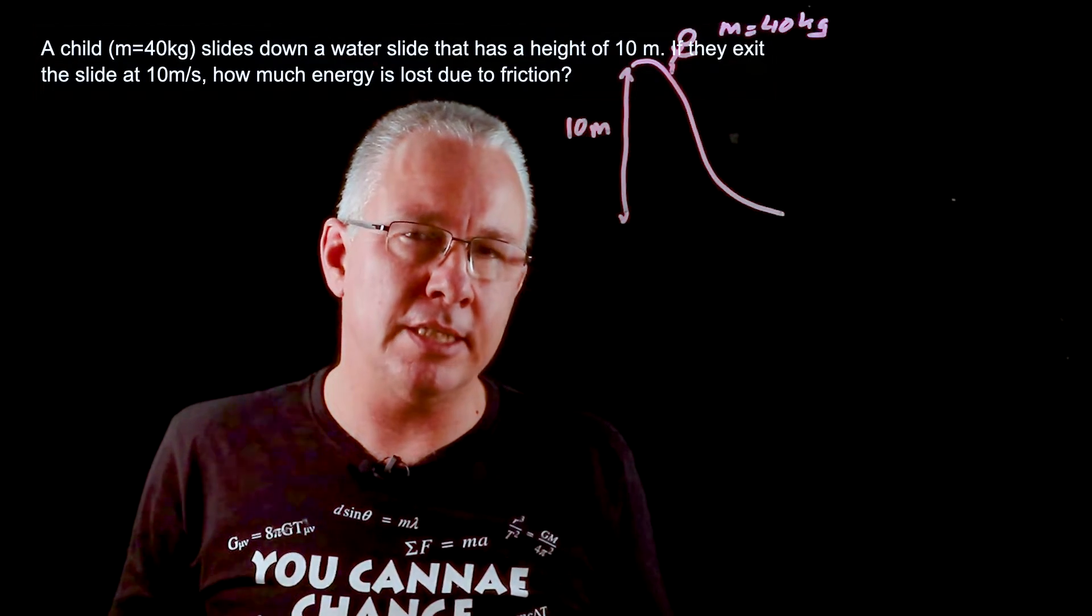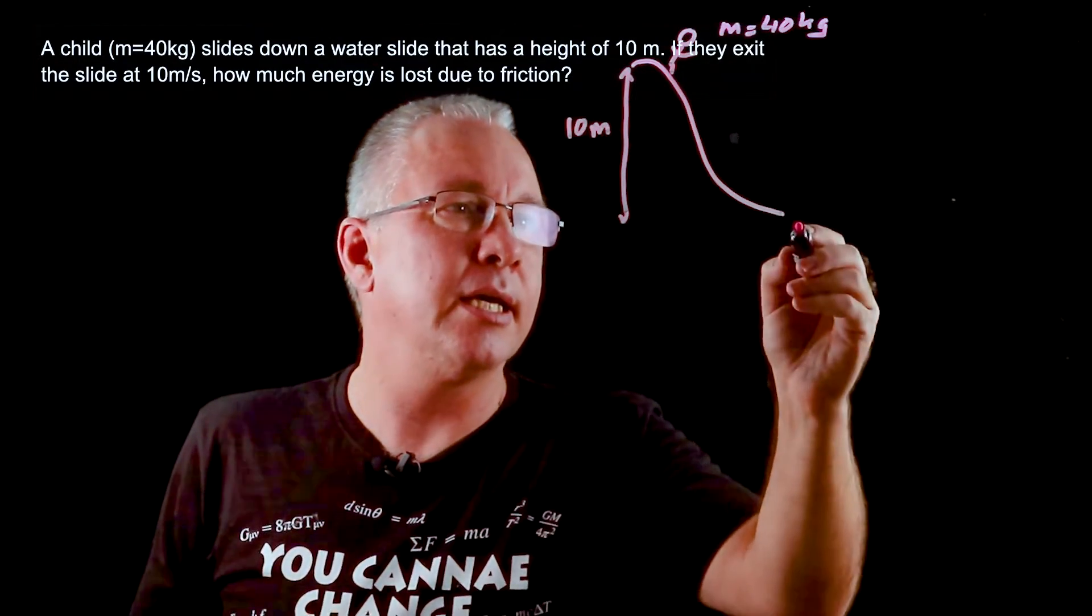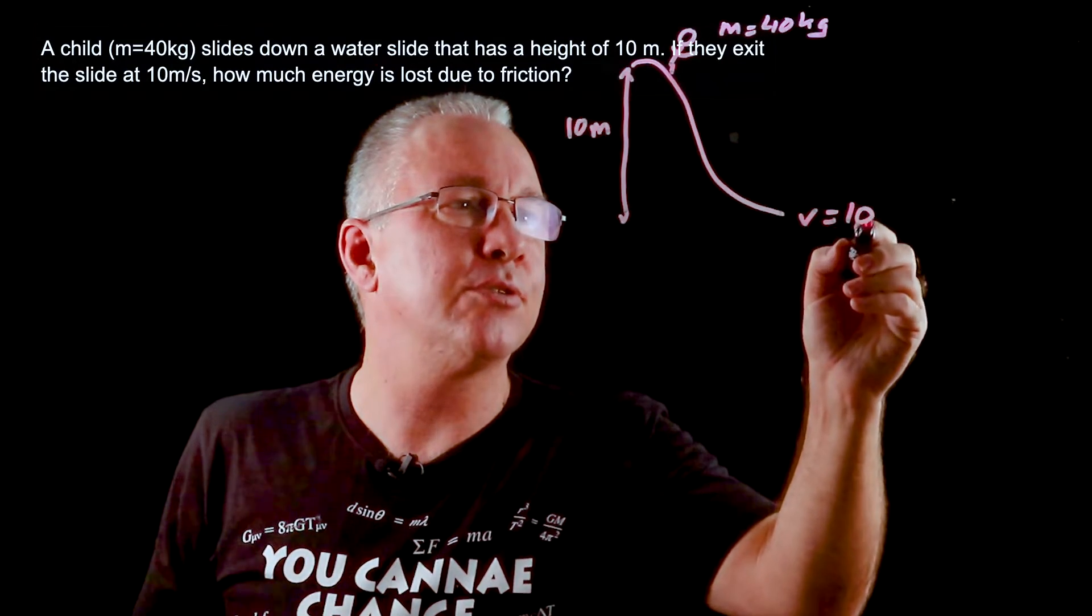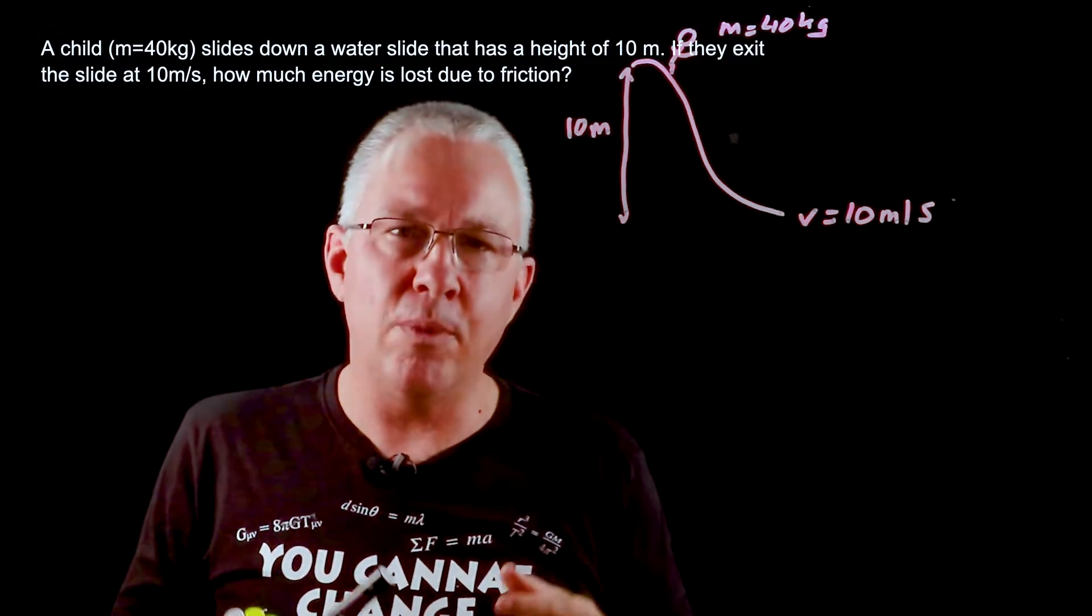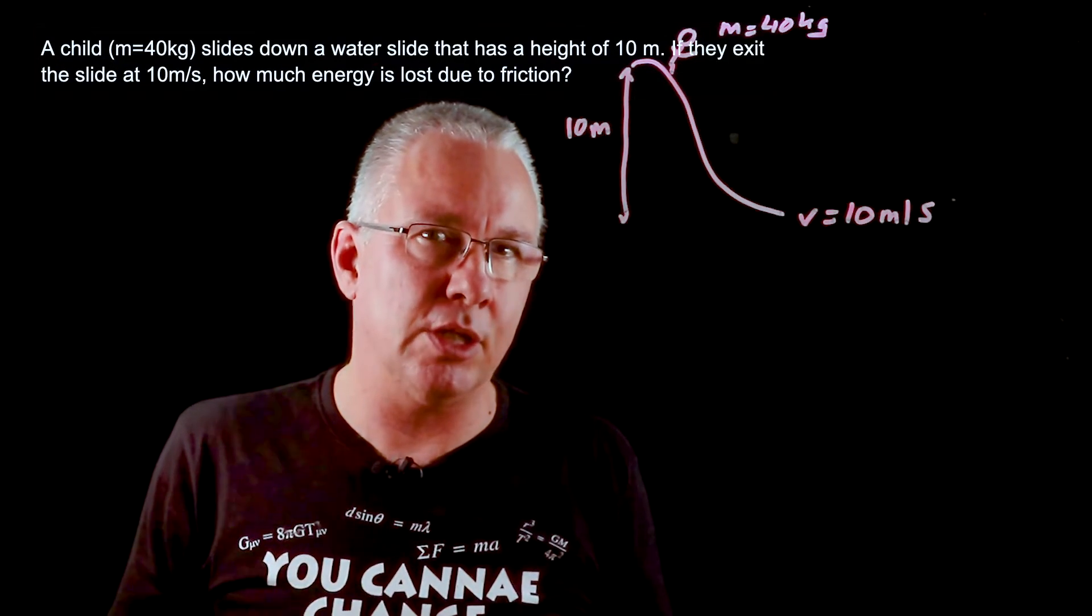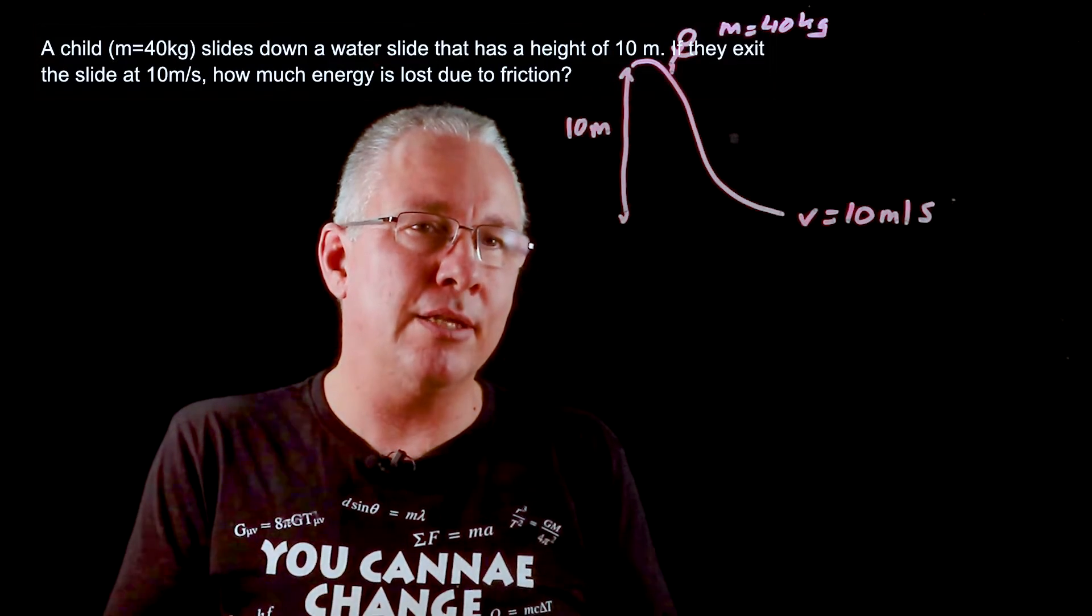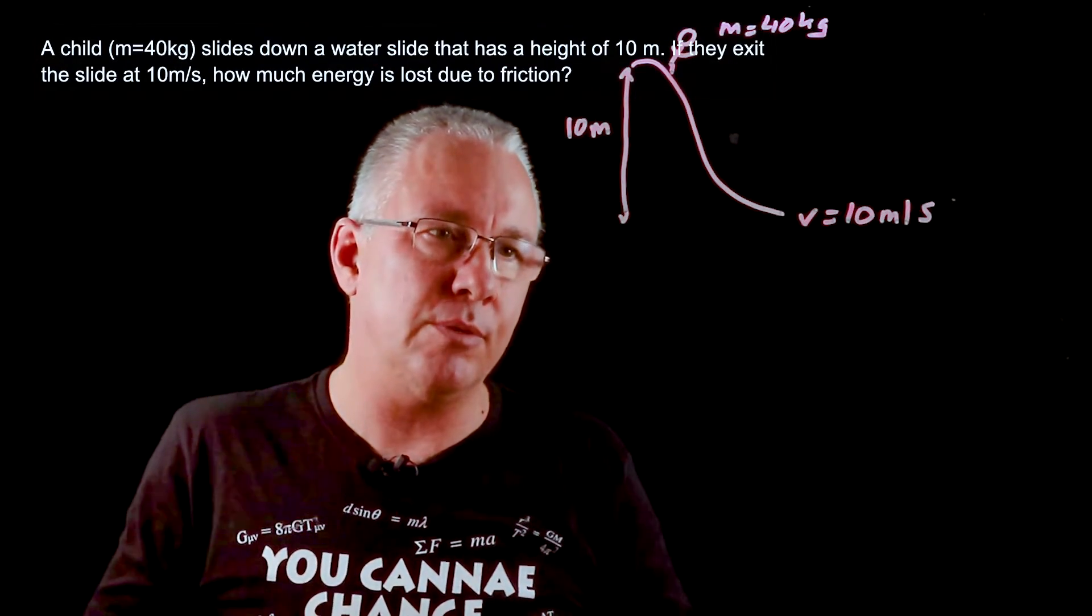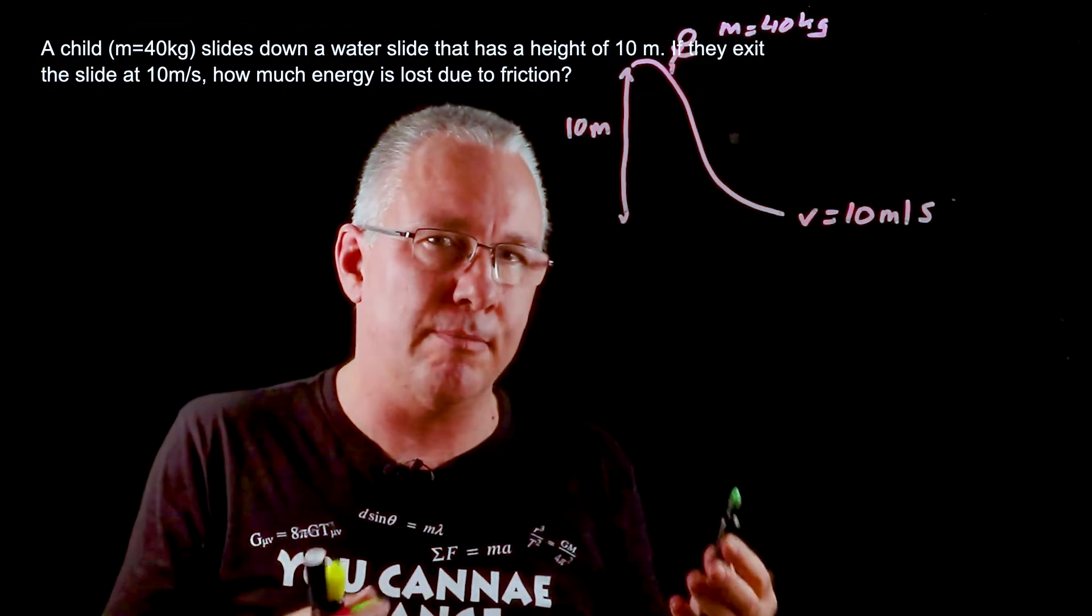We're also told that the velocity at which they exit the slide in this case is equal to 10 meters per second and we know that as they slide they're going to lose some energy along the way. In terms of conservation of energy we say that the total energy of the system remains unchanged.